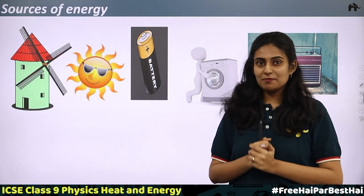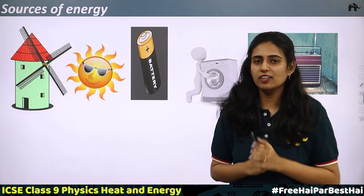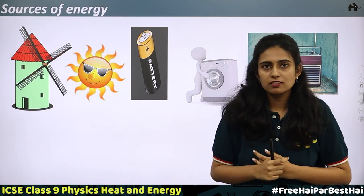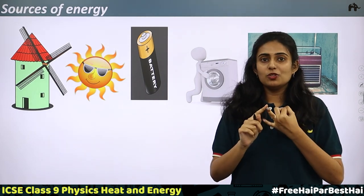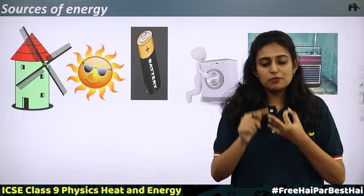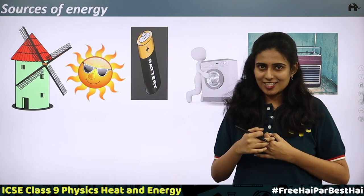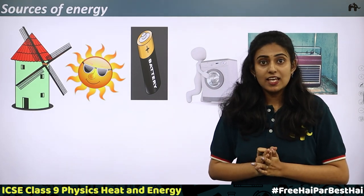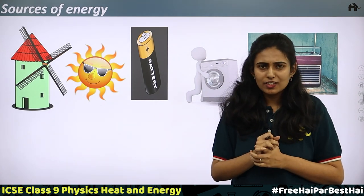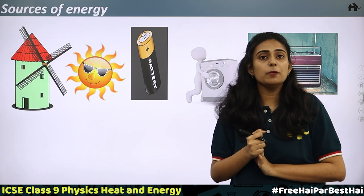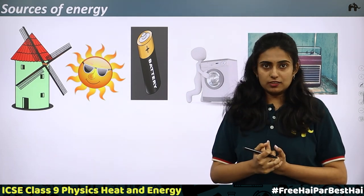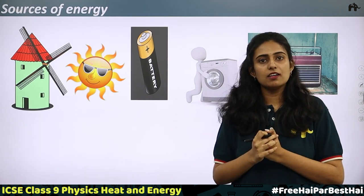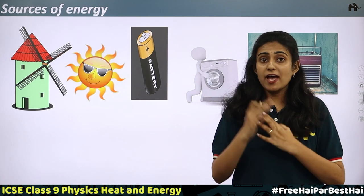Sources of energy. First, what is energy? Energy is the ability to do work. From morning we are doing various works — we wake up, go to the washroom, go to school, have food, walk, ride a bicycle, drive a vehicle — for all this we need energy. If you don't have food for two days, you won't have energy and won't be able to do any of these works. To prepare food we need heat; we light the stove and the food is prepared. So where does this heat come from? This is a source of energy.